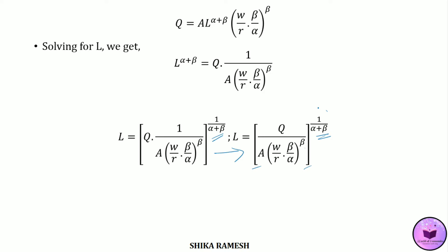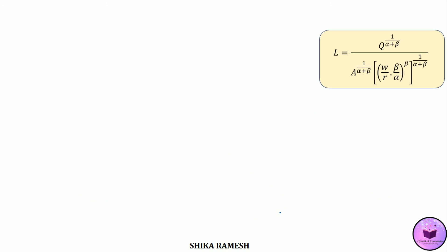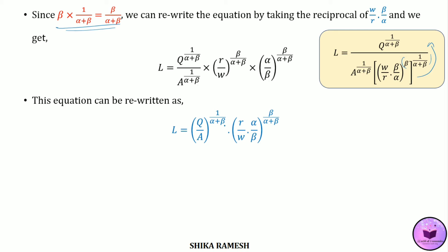Opening the brackets, each term is raised to the power 1/(α+β). The exponent β·(1/(α+β)) = β/(α+β). Since this term is in the denominator when we take it out, we take reciprocals and rewrite: L = [Q^(1/(α+β))] / [A^(1/(α+β))] · (R/W)^(β/(α+β)) · (α/β)^(β/(α+β)). This simplifies to: L = (Q/A)^(1/(α+β)) · (R/W · α/β)^(β/(α+β)).